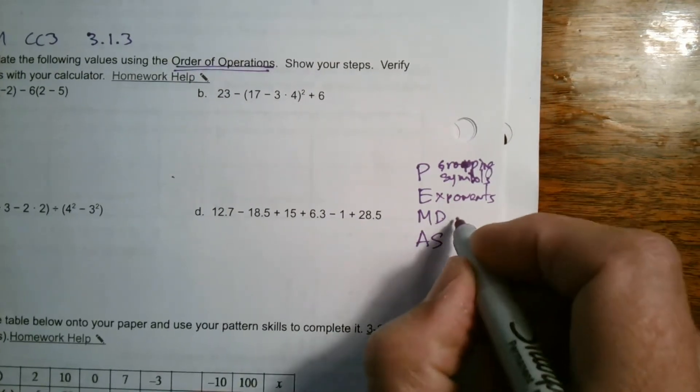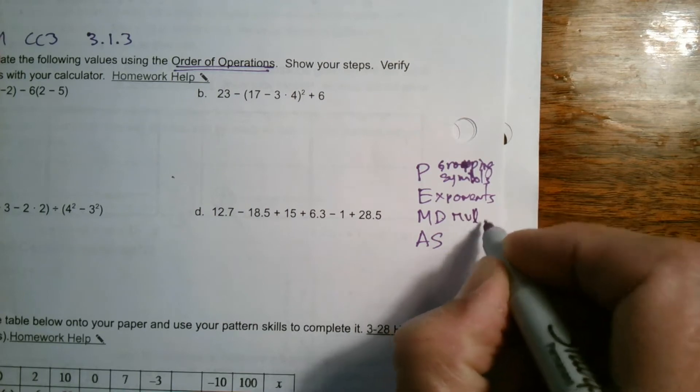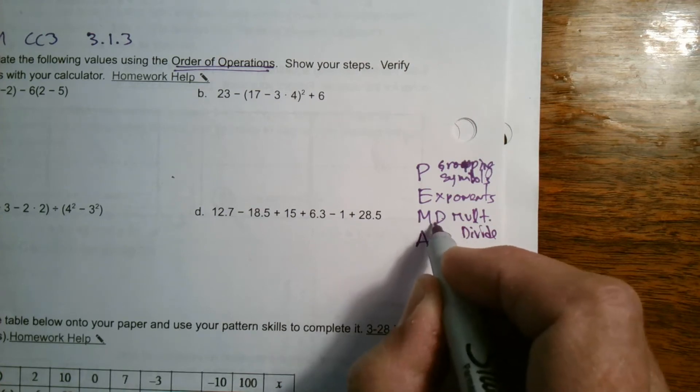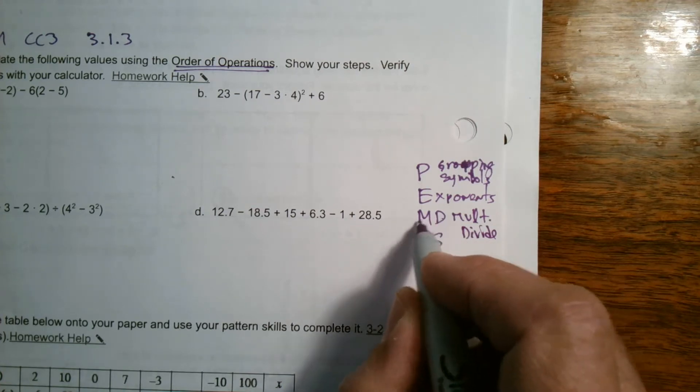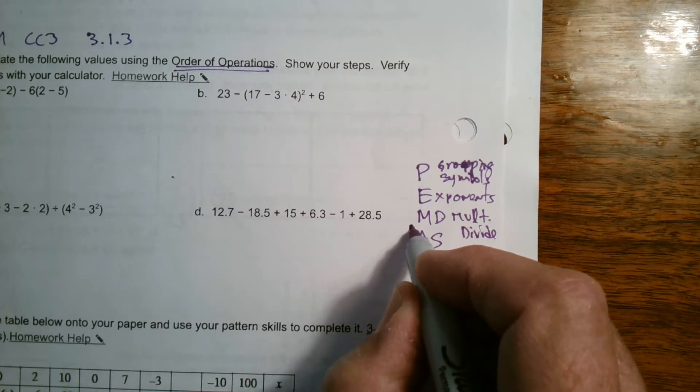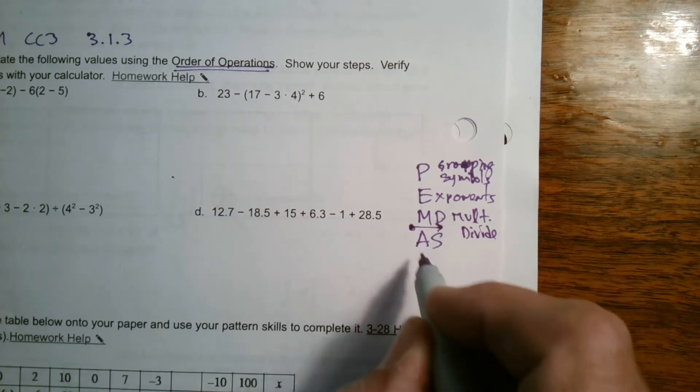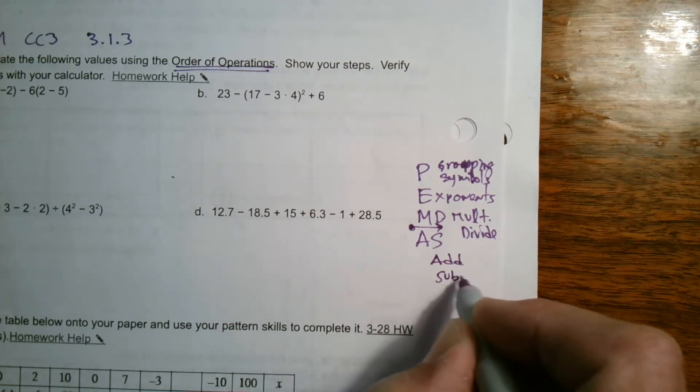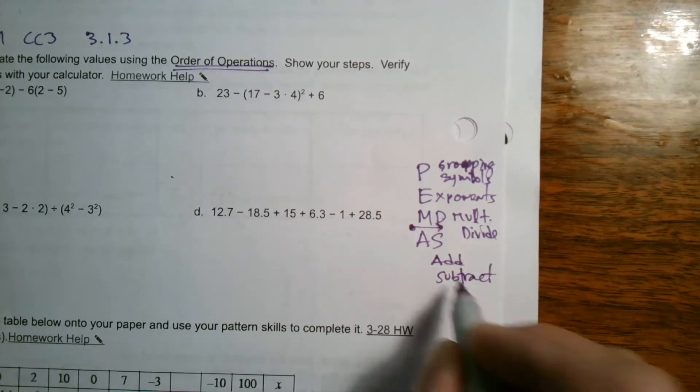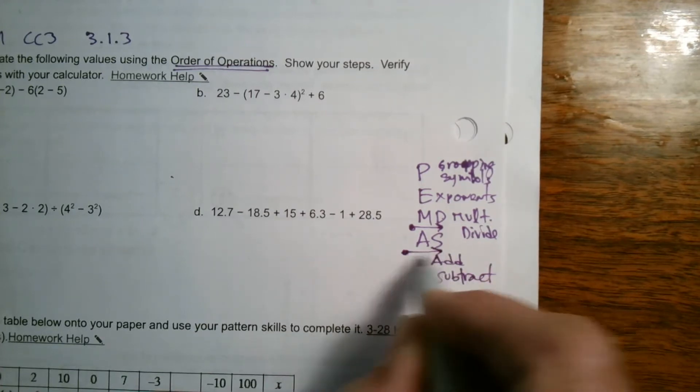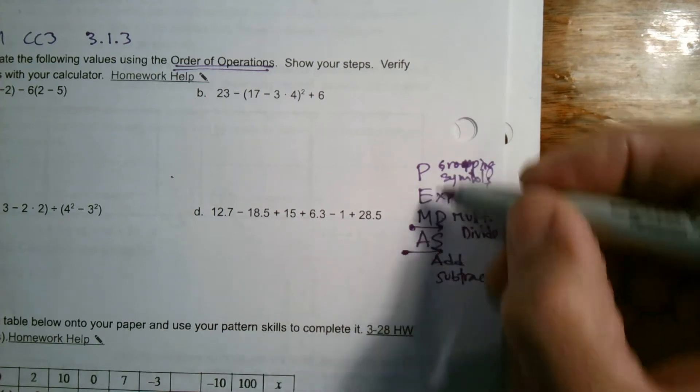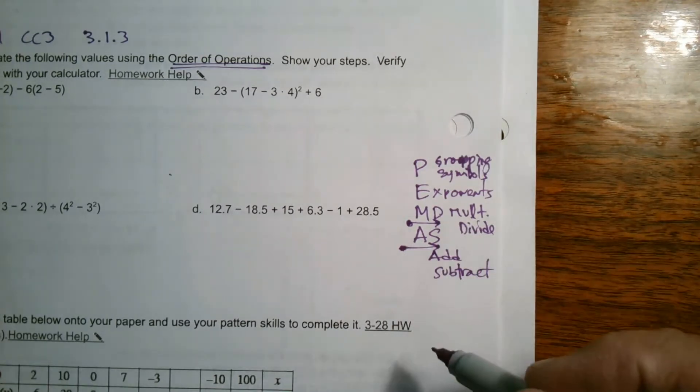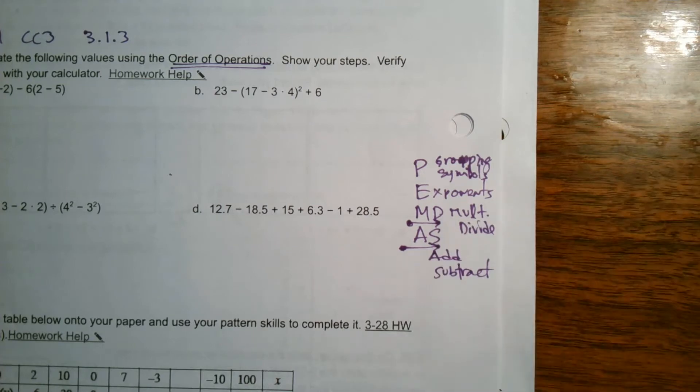M and D are multiply and divide. Why do I write them on the same line? Because the order doesn't matter. What orders is you go from left to right. You start on the left, you just go from left to right, whatever comes first, whether multiply or divide comes first. And then the A and the S is add and subtract. Again, same thing, you start from the left and work your way to the right, from left to right, whatever comes first, add or subtract. But always multiply or divide before you add and subtract. That's the part we've got to remember. So here's my order of operations. Let's look at each of these.